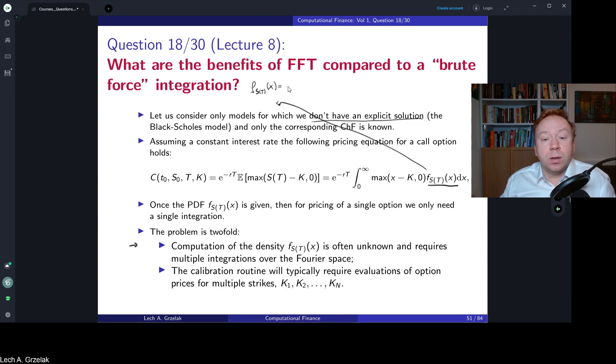The density of S_T for given x can be calculated using Fourier transformations. We have inverse Fourier, so we have e^(-iux) times f (the characteristic function) du. This means that if we want to calculate this integral for multiple x's, a whole domain of x from zero to infinity, for every x we have to calculate this numerical integral. For every x which is here, we need to calculate integral over the Fourier domain. This will be extremely expensive.